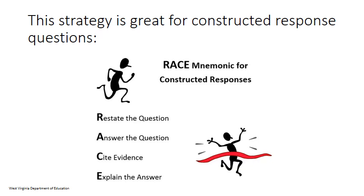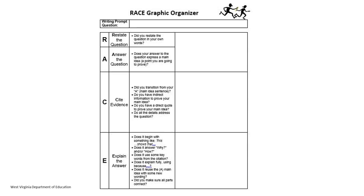When you are asked to answer a question in your online class, it is important to create a thorough, well-thought-out response. One way to do this is to use the RACE mnemonic. If your response restates the question, answers the question by expressing the main idea, cites evidence from the text with either a direct quote or a paraphrased indirect quote, and fully explains why your text evidence is important, you will have written an excellent answer.